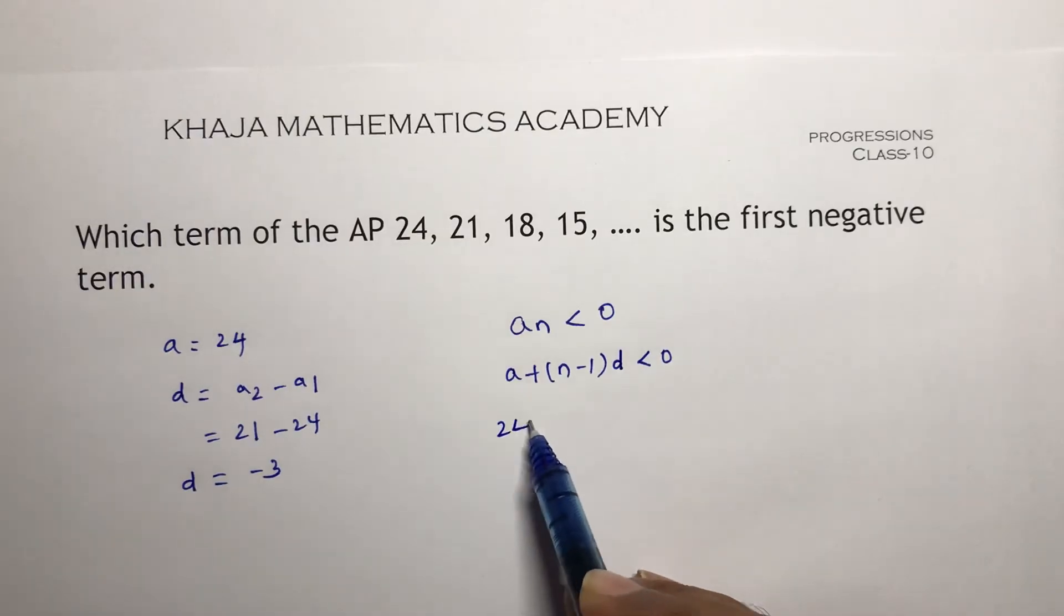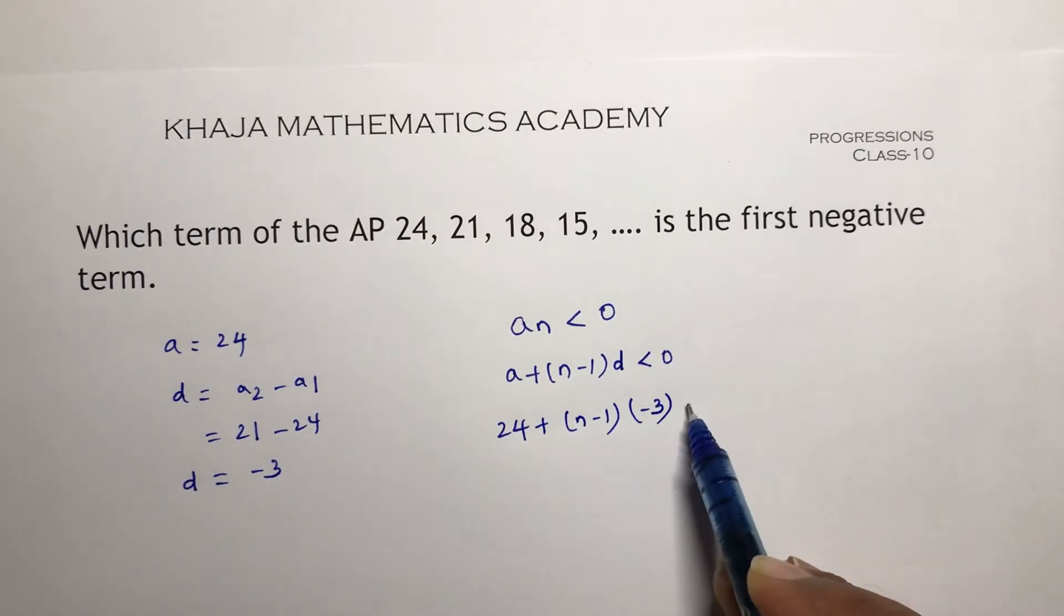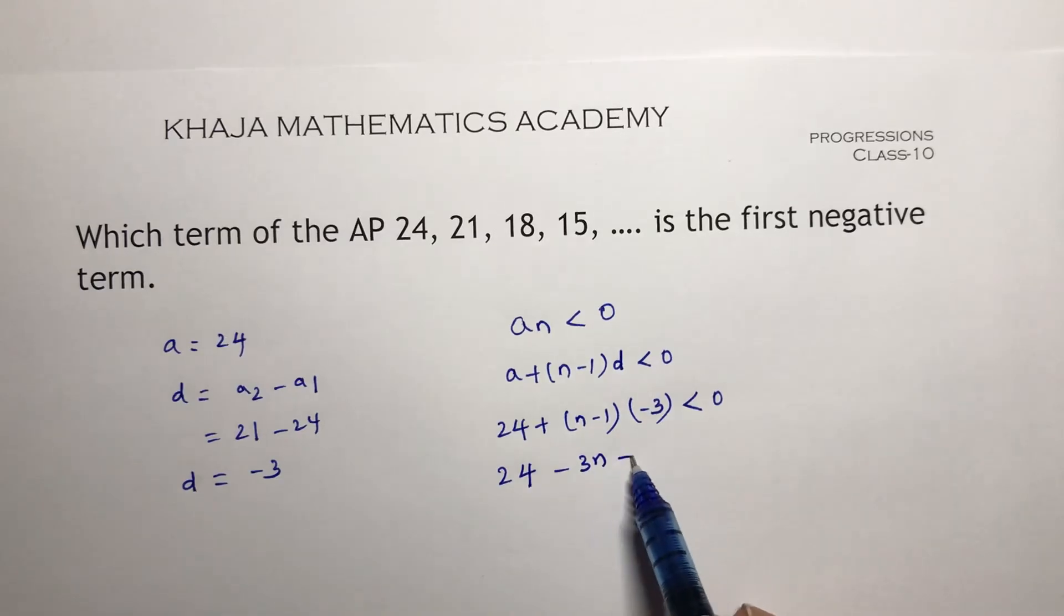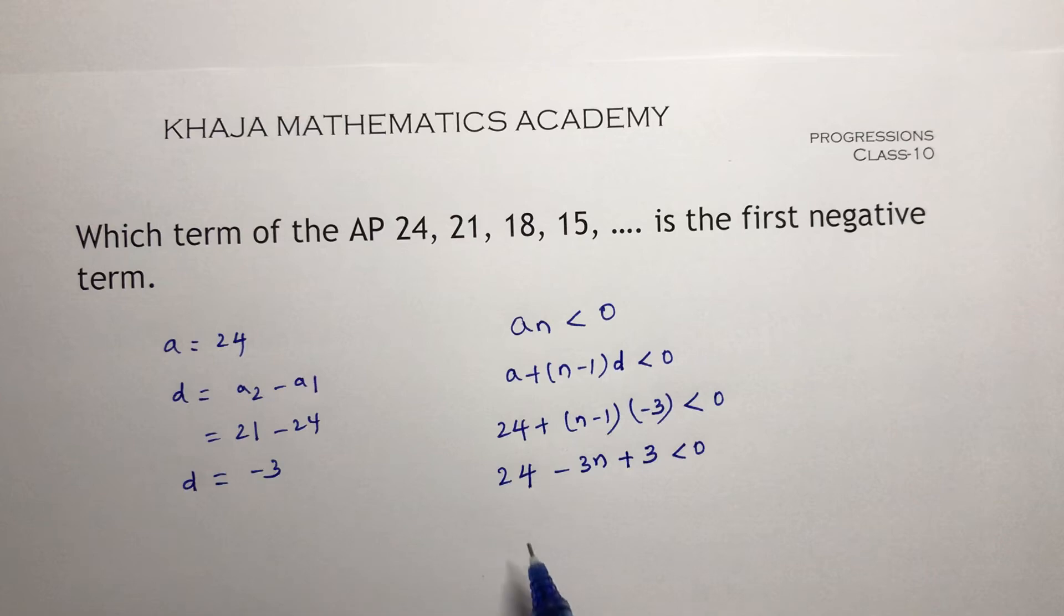So a is 24 plus n minus 1 into minus 3 less than 0. So 24 minus 3n minus into minus it is plus 3 less than 0. 27 minus 3n less than 0.